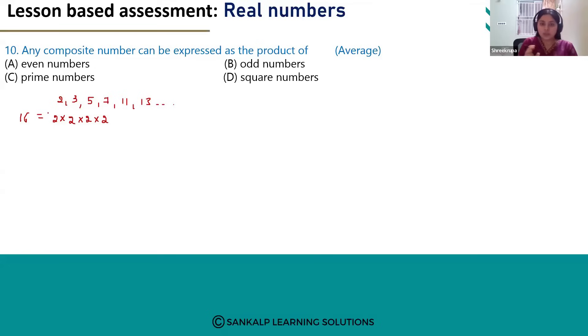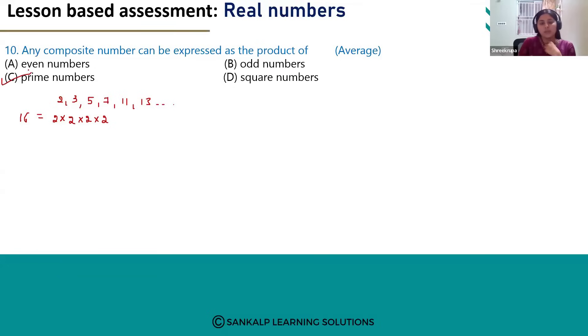Composite numbers can be expressed as the product of prime numbers. So, the correct option is option C: prime numbers.